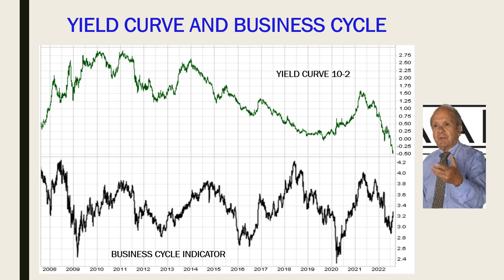The purpose of this chart is to show you how the yield curve is related to the business cycle. This is the business cycle as we compute it — a proprietary indicator computed real-time from market data. The economy started slowing down and the yield curve has been flattening and then inverting. Here, the economy was expanding and the yield curve was steepening. Here, the business cycle started slowing down and the yield curve has been flattening. The yield curve is closely related to the trends in business activity.